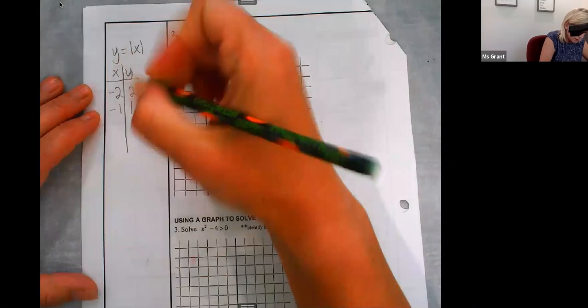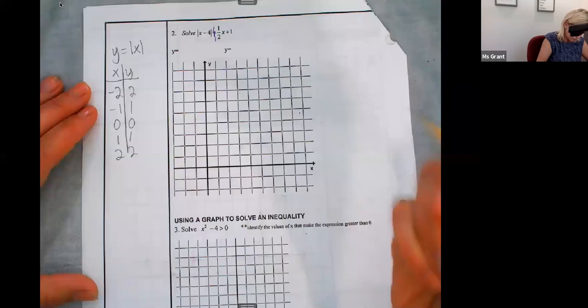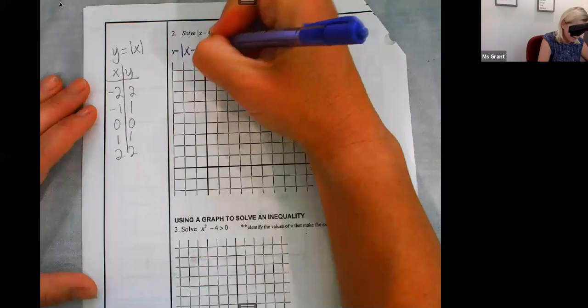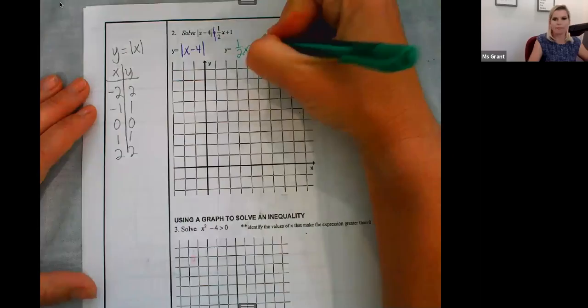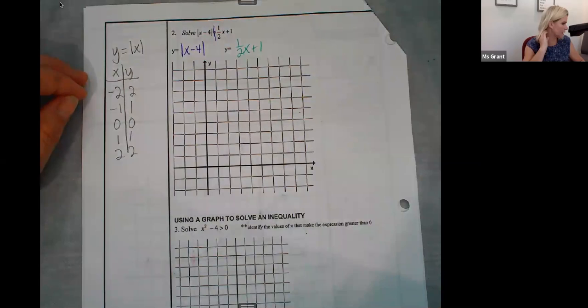Negative 2, 2, negative 1, 1, 0, 0, 1, 1, 2, 2. So I have y equals the absolute value of x minus 4 and y equals 1 half x plus 1. I'm splitting my given question into two separate.